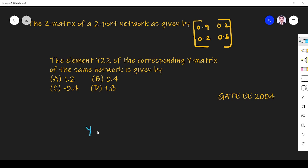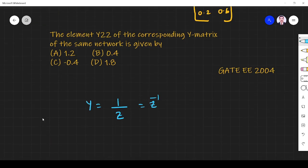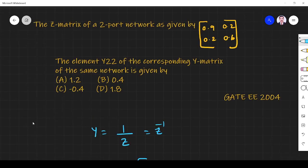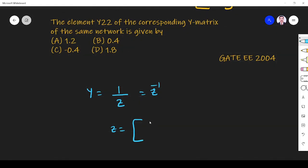We know the relationship between Z-matrix and Y-matrix: Y is equal to 1 by Z, Z inverse. So if I find Z inverse I can find Y value. So Z they have the value. What is that? 0.9, 0.2, 0.2, 0.6.